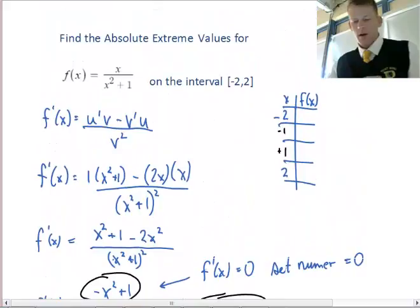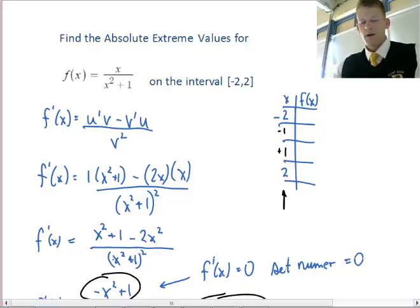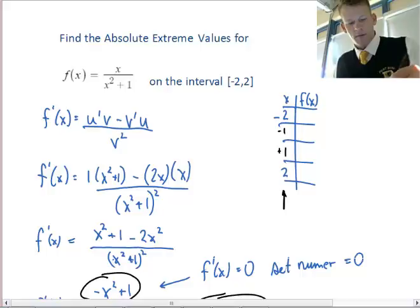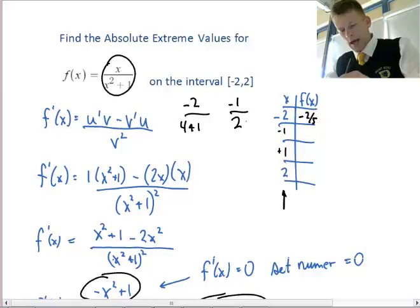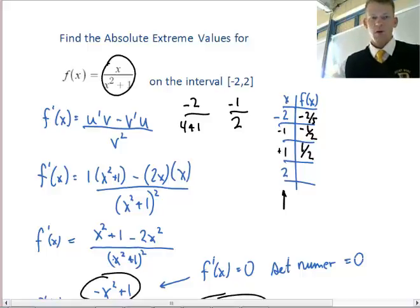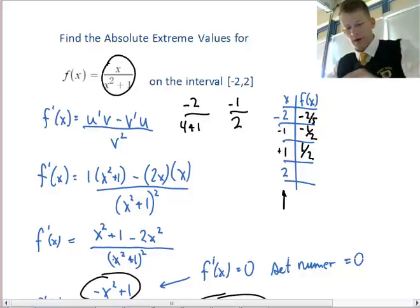Now we go back to the table and fill in the values. Here's a big thing people do all the time: they accidentally plug these values into the derivative equation, but we don't care what the derivative value is. We want to know what the function value is at the endpoints and critical points. I plug -2 into the function and get -2/5. Next I plug -1 and get -1/2. I plug in positive 1 and get 1/2, and then plug in 2 to get 2/5.